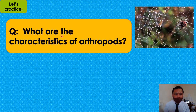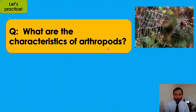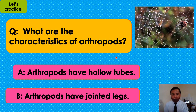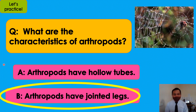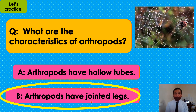What are the characteristics of arthropods? What's your answer: A or B? I will give you three counts: one, two, three. The answer is B — arthropods have jointed legs. Very good!